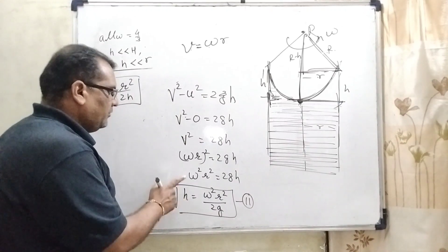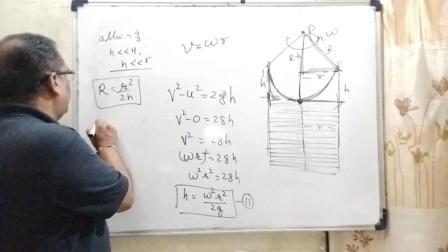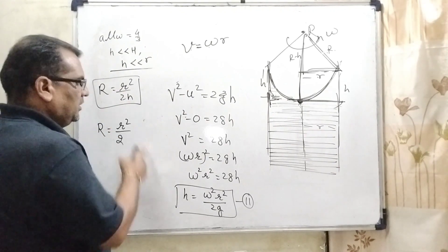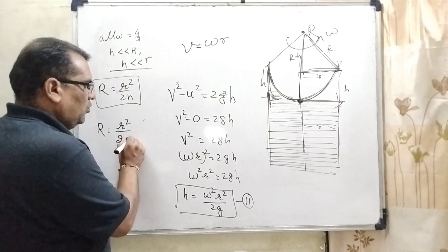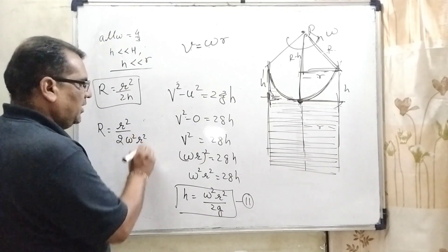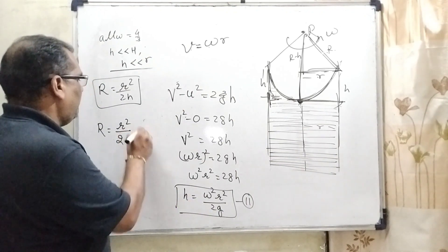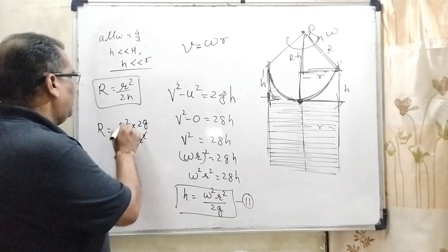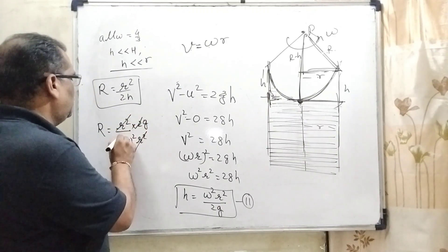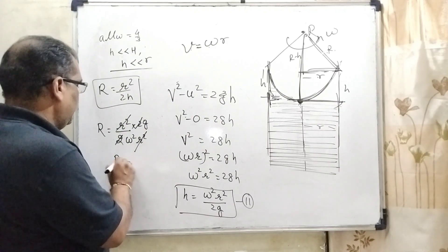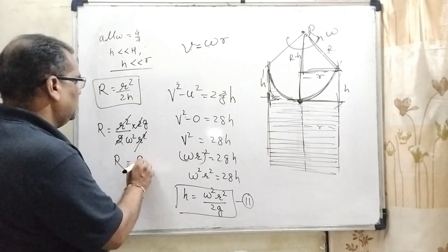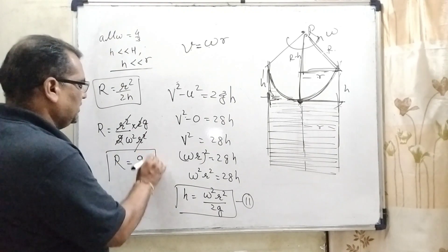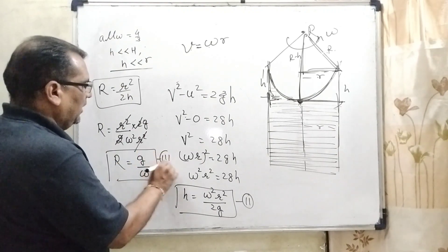Now substituting the value of h = ω²r² / (2g) into our first equation R = r² / (2h), we get R = r² / (2 × ω²r² / (2g)) = g / ω². So the radius of curvature capital R = g / ω². This is our third equation.